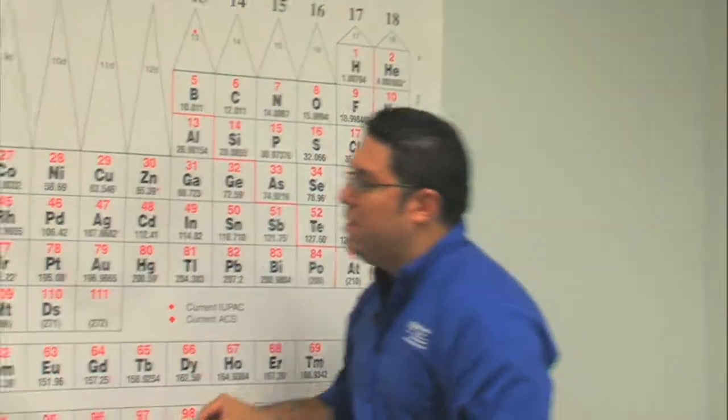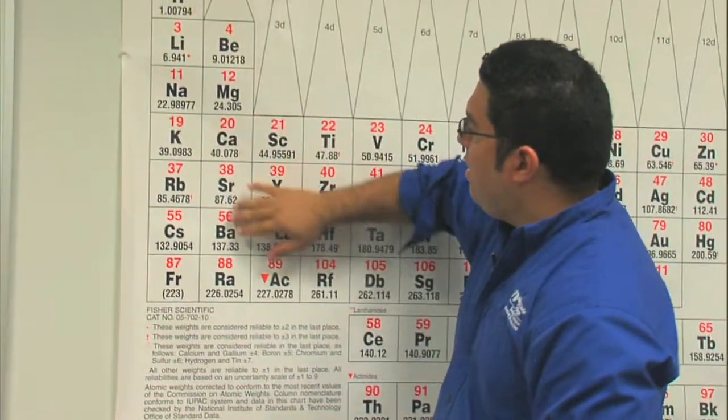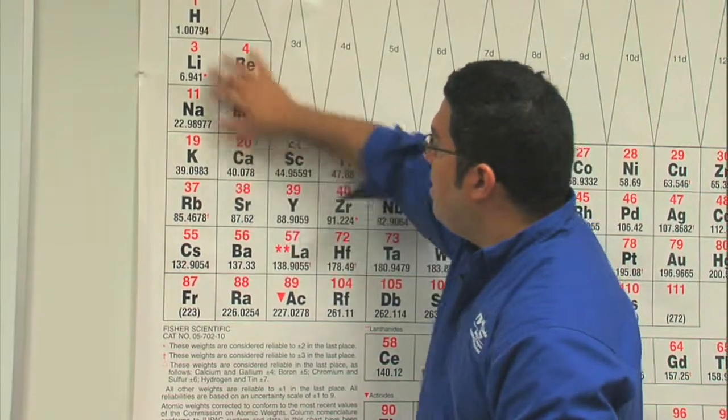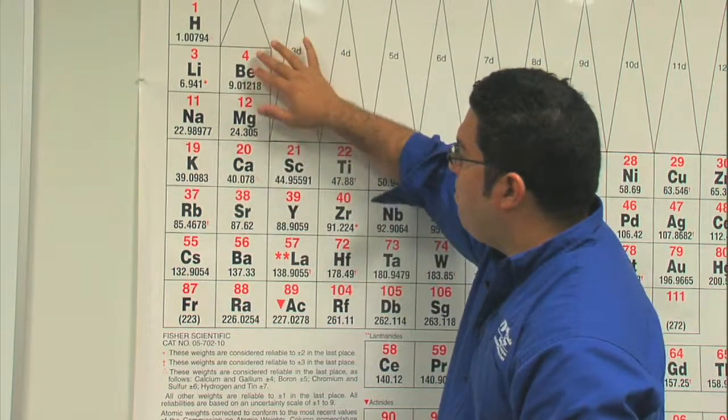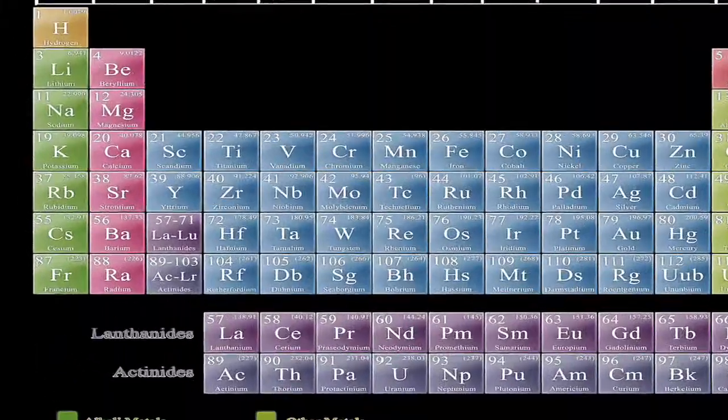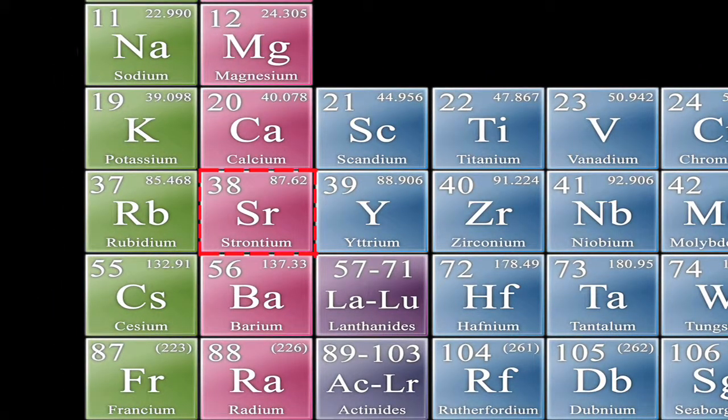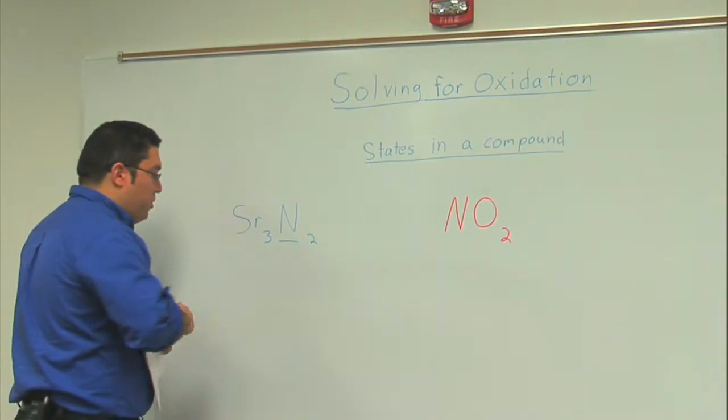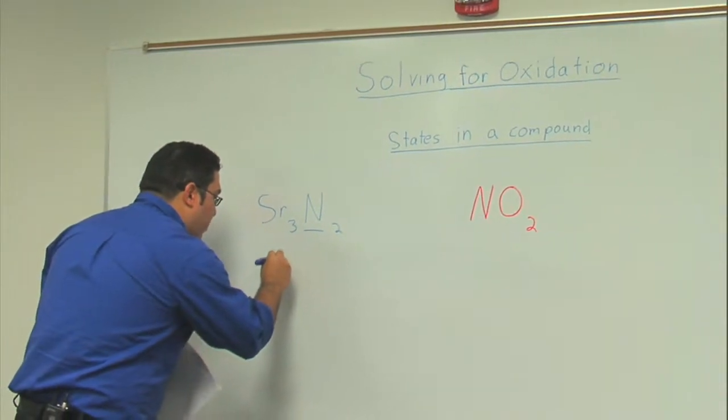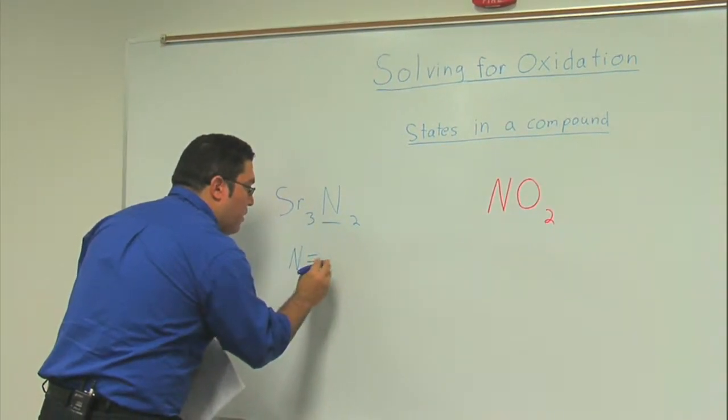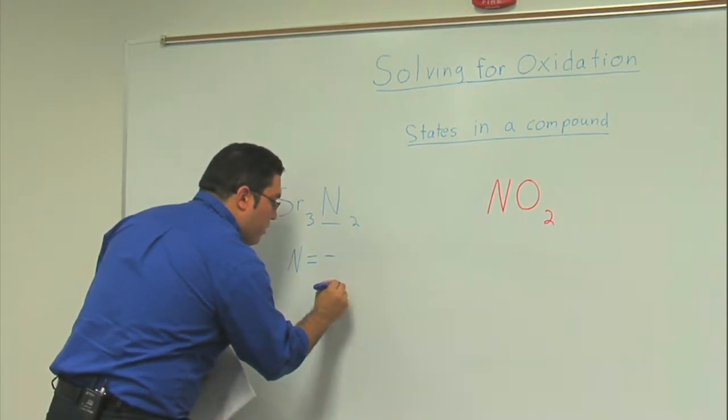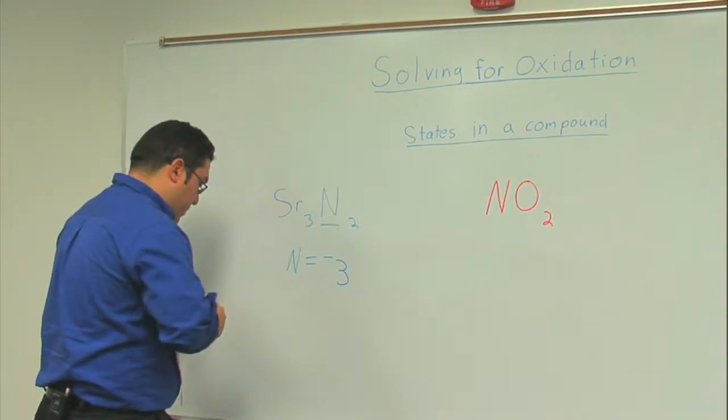If we look at strontium here in the second column, the charges for these metals go positive one for the first column, positive two for the second column. So strontium is a positive two charge, which means it is losing two electrons. If they were to ask you what's the charge of nitrogen, you could simply say that nitrogen is equal to negative three.